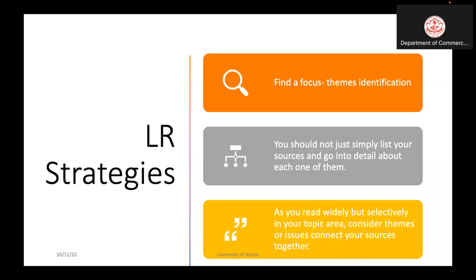Theme identification is a very difficult stage in a literature review. Sometimes you may be biased with the themes, sometimes you may select wrong themes, and sometimes you may miss the right themes — all of these should be avoided. We have to have a clear understanding of the research area and focus on themes. Scholars can consult with their research guide or consult with experts for theme identification.